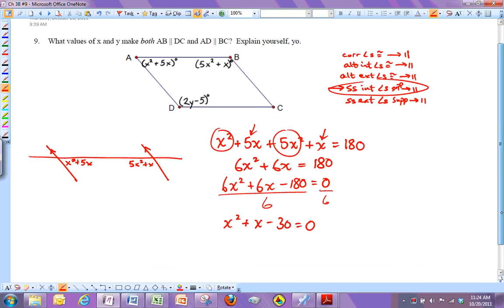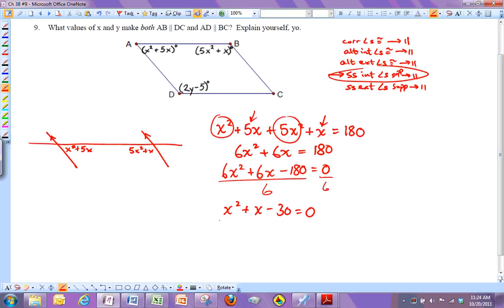Now this one I think is easier to factor. So if you're good at factoring, this turns into an x and an x. I need two numbers that multiply to negative 30 but add to 1. And so those two numbers are going to be positive 6 and negative 5.